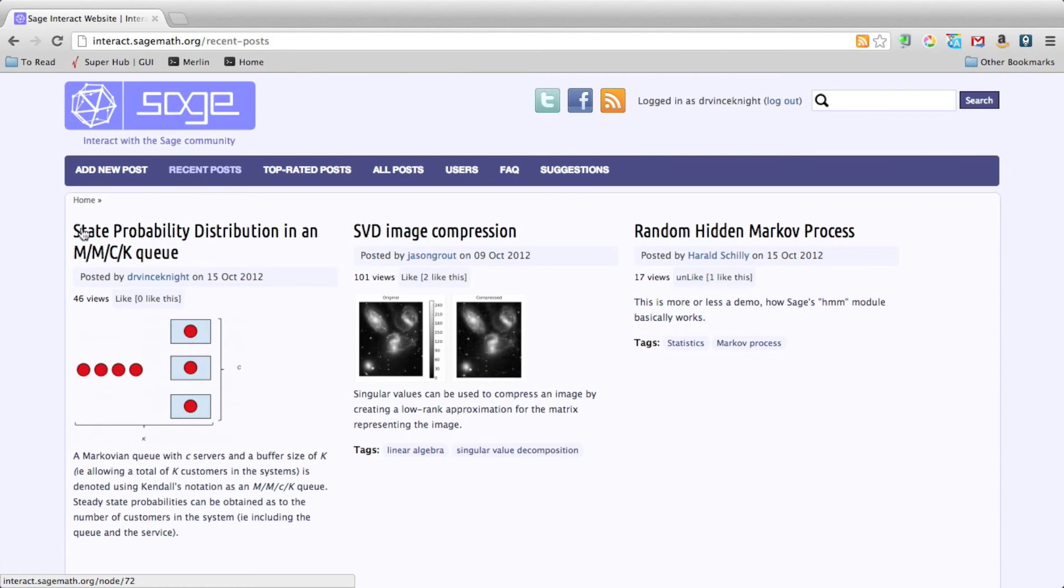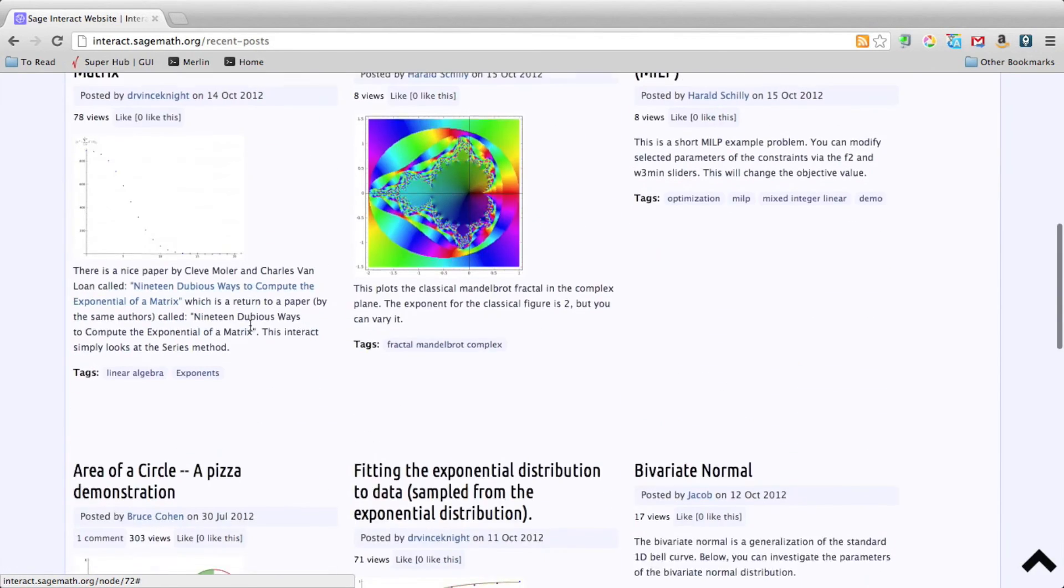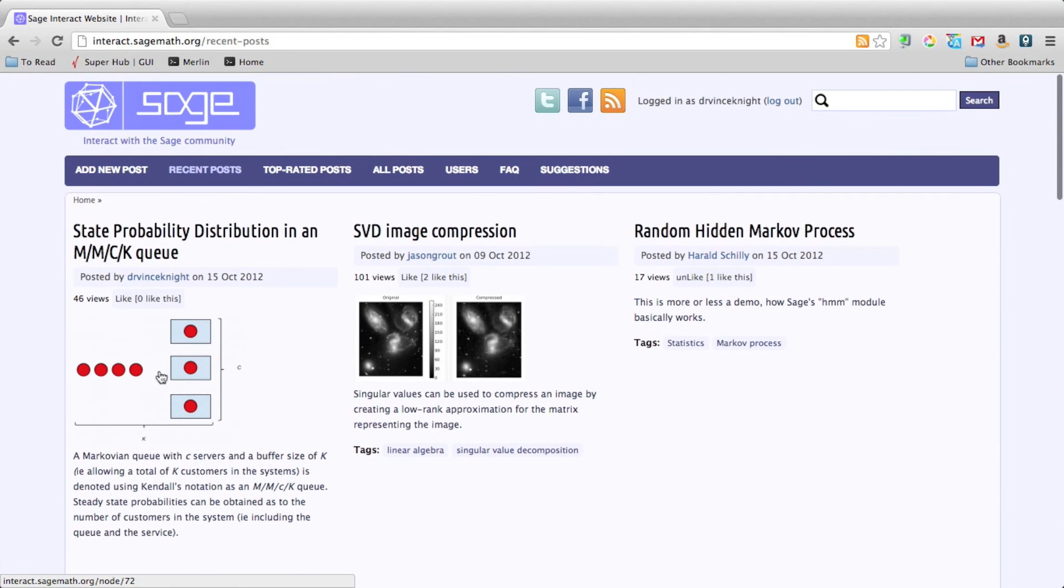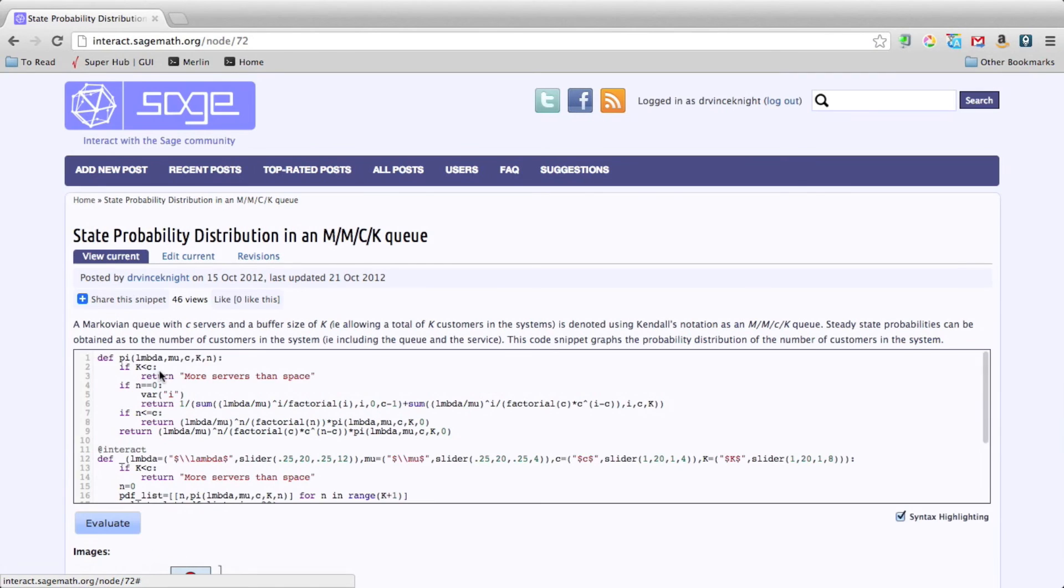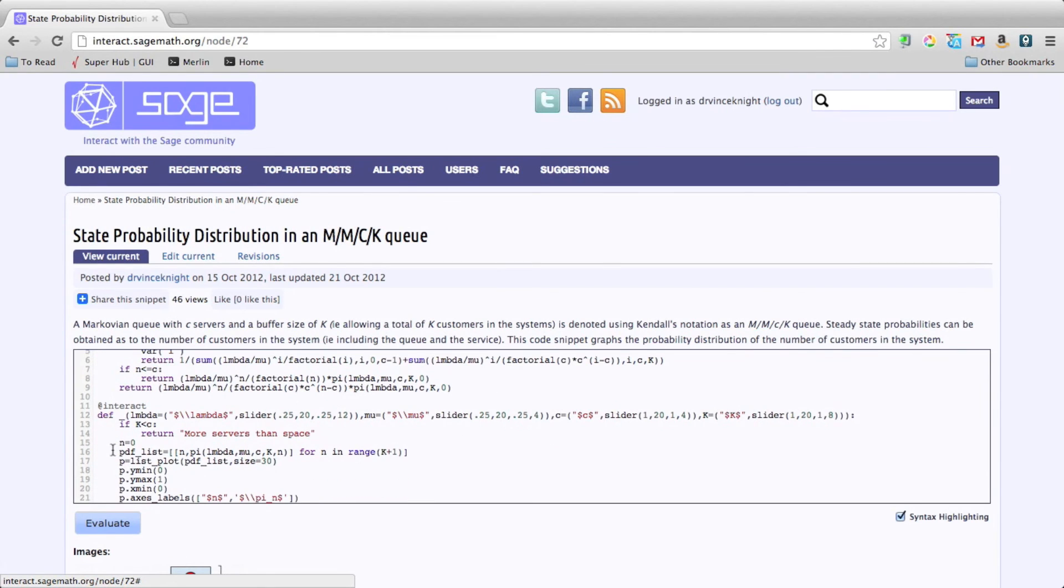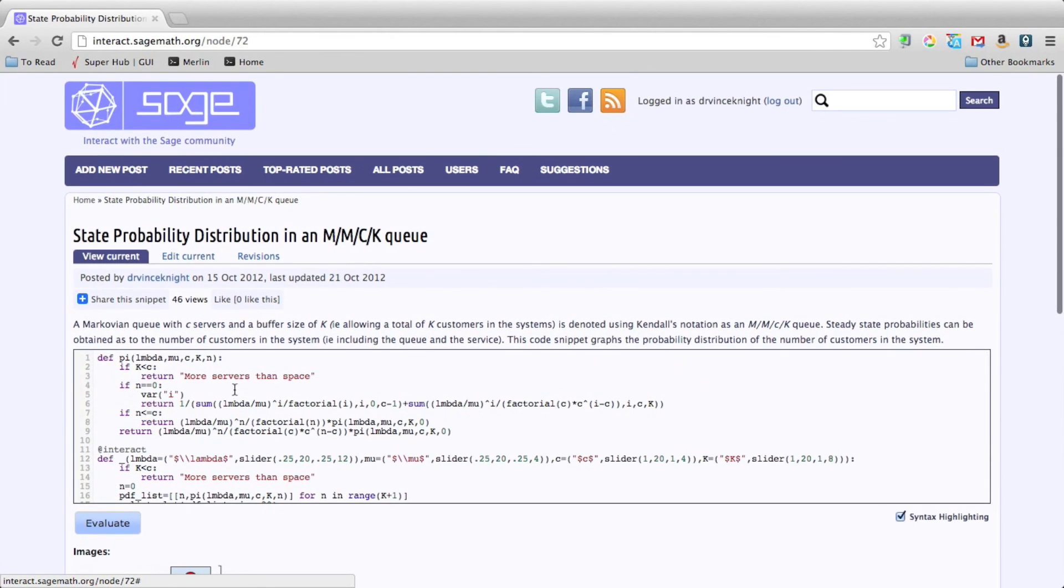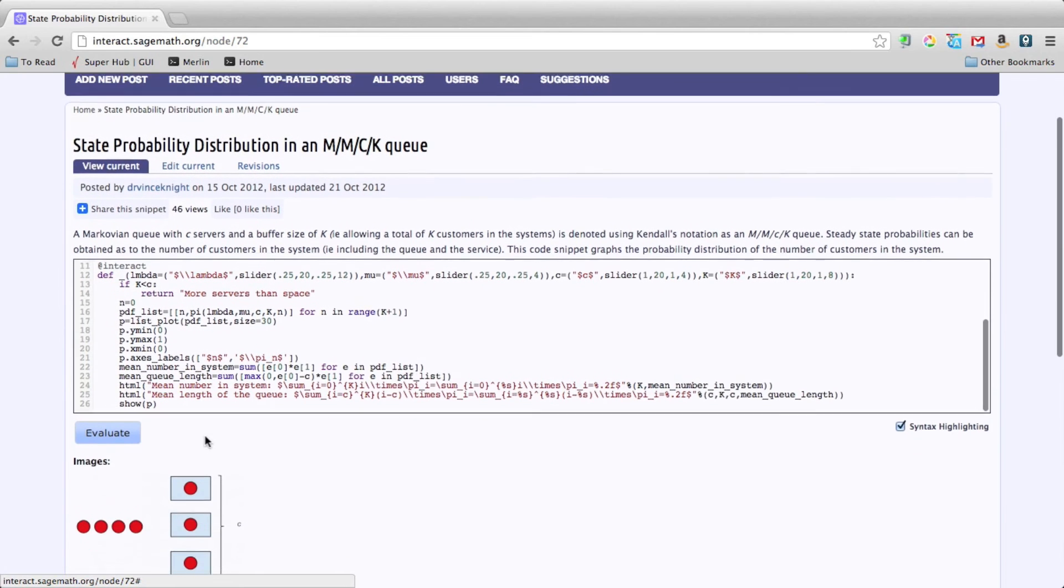For example here, this little interact, there's a whole bunch of really good ones to take a look at. If we click on that, there's a description of the problem. There's a whole bunch of code there. If you look carefully, you should recognize the formulae that we had up just now. But you don't have to.